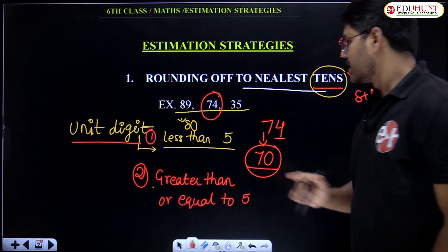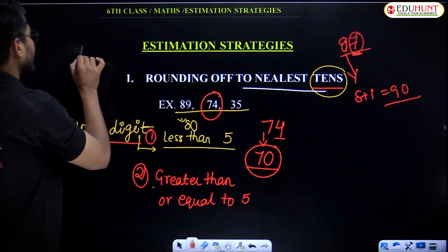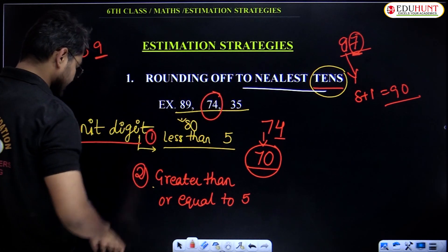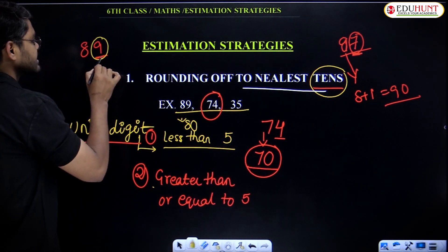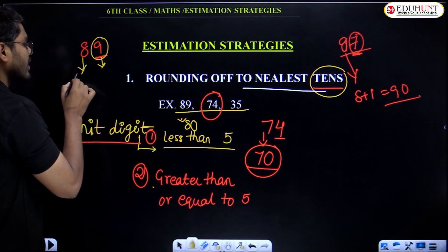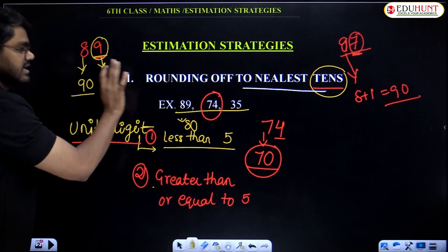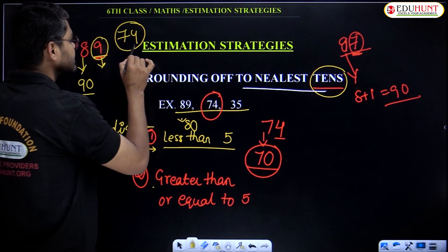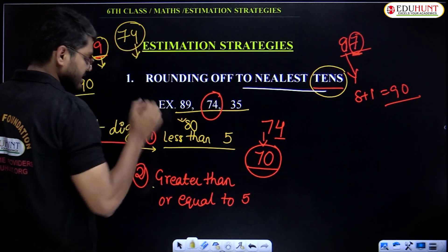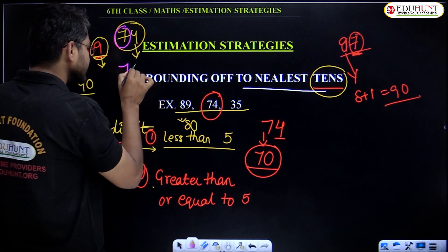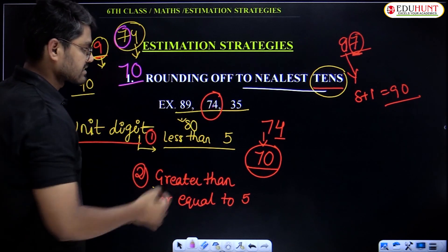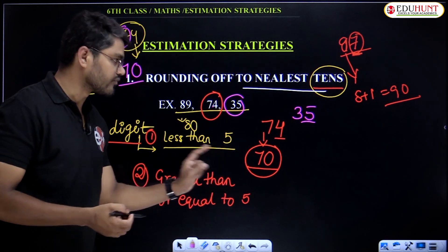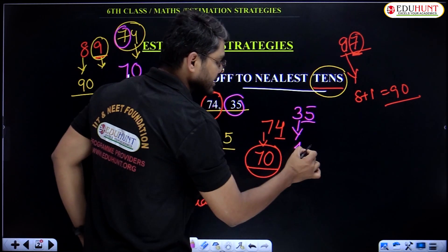Now solve: 89, 74, and 35. For 89, the unit digit is 9, which is greater than 5. Add 1 to 8, that is 9, and remaining digit is 0. Answer: 90. For 74, the unit digit 4 is less than 5, so keep 7 as it is, remaining digit 0. Answer: 70. For 35, the unit digit is 5, which satisfies the second condition — greater than or equal to 5. Add 1 to 3, that is 4, remaining digit 0. Answer: 40.